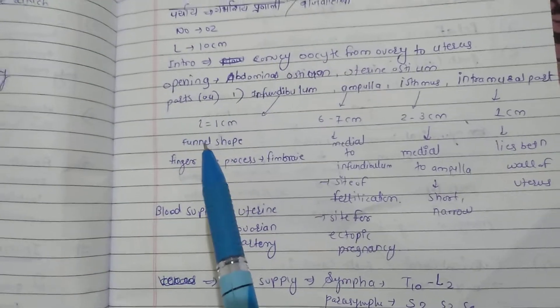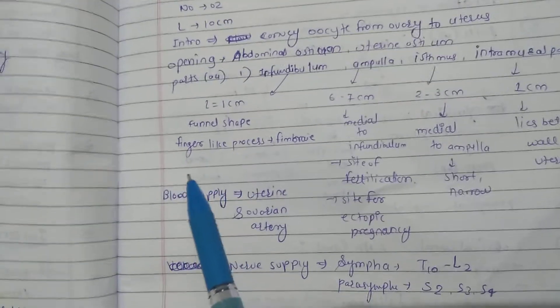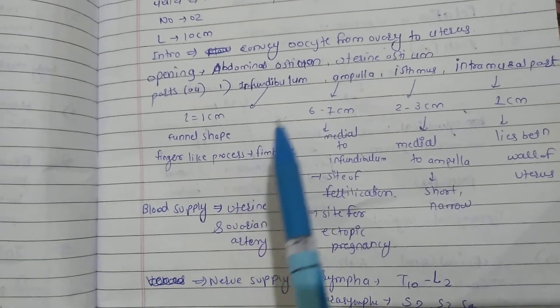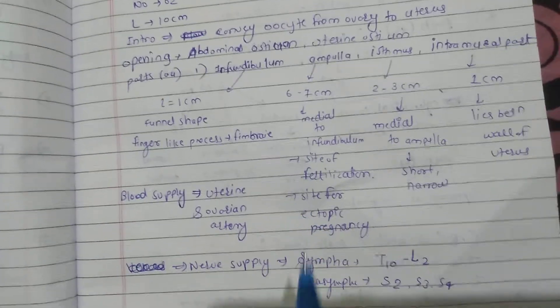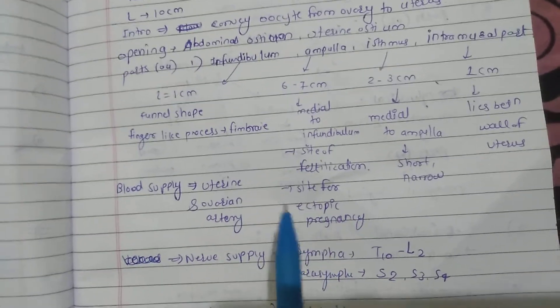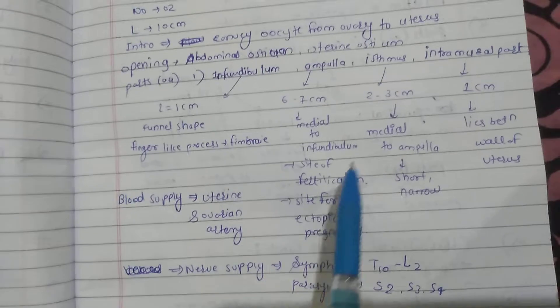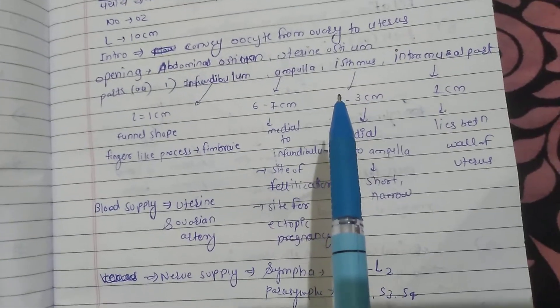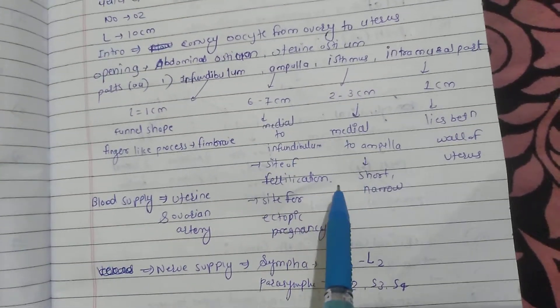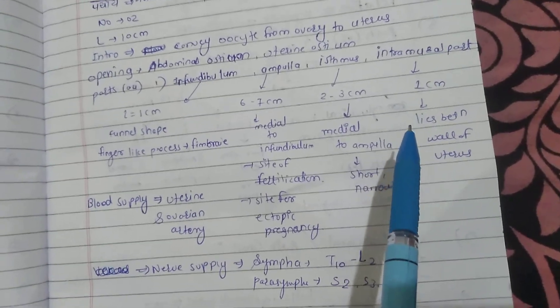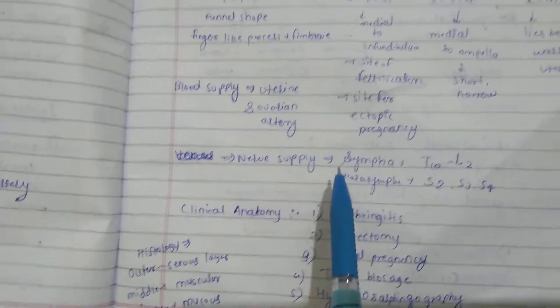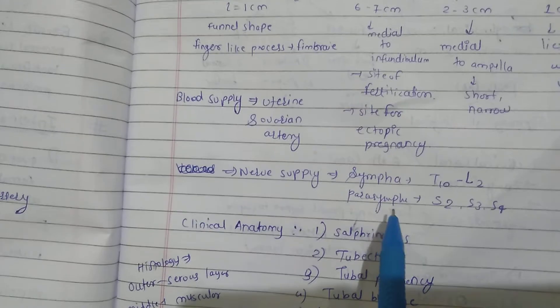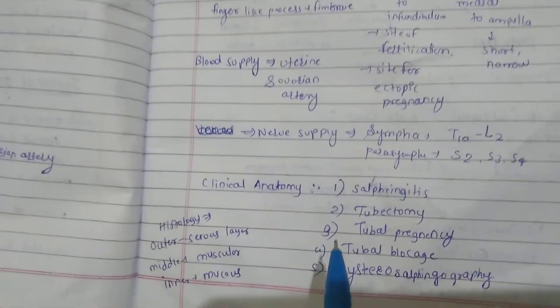The infundibulum is 1 cm long, funnel-shaped, with finger-like processes called fimbriae. The ampulla is 6 to 7 cm long, medial to the infundibulum, and is the site of fertilization and site of ectopic pregnancy. The isthmus is 2 to 3 cm long, medial to the ampulla, short and narrow. The intramural part is 1 cm and lies within the wall of the uterus. Blood supply: uterine and ovarian artery. Nerve supply: sympathetic T10 to L2, parasympathetic S2, S3, S4.